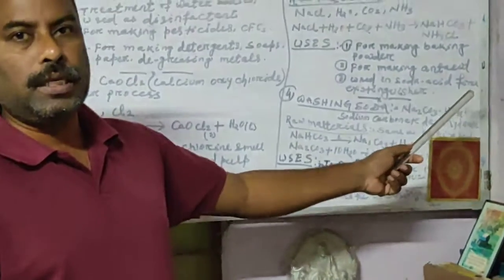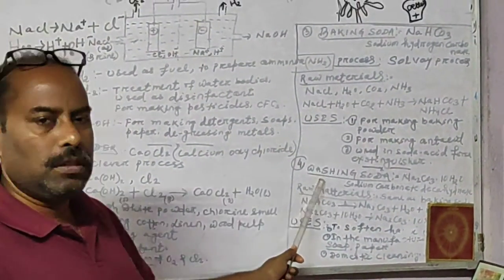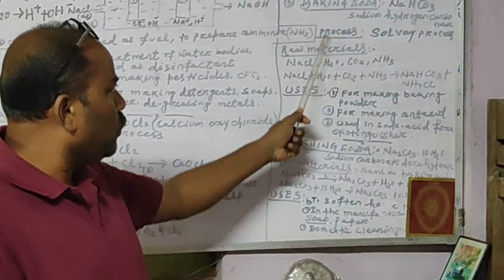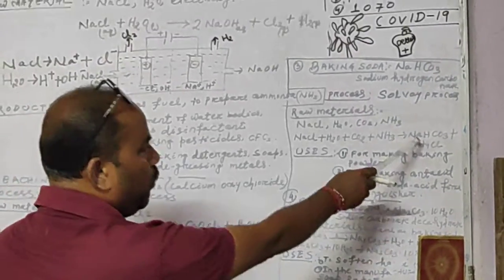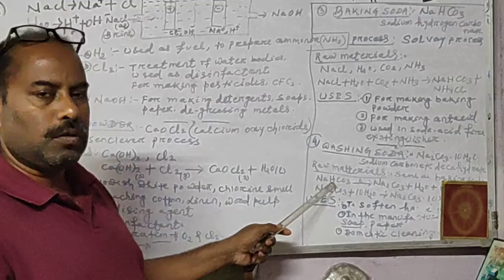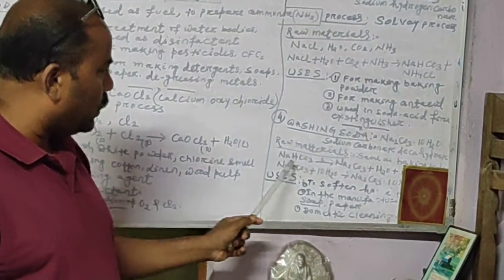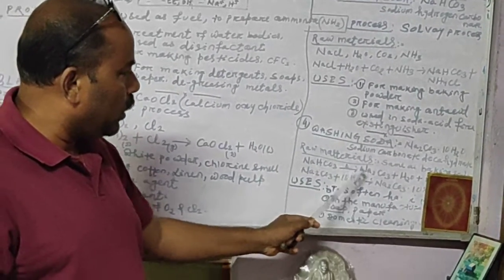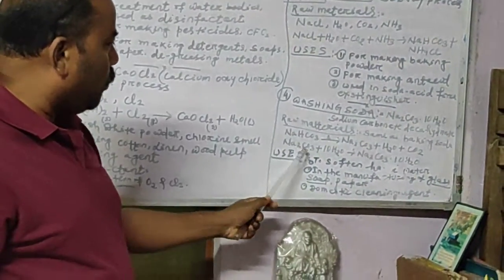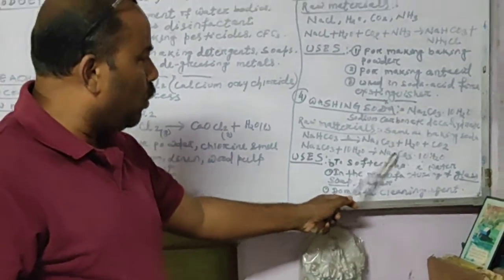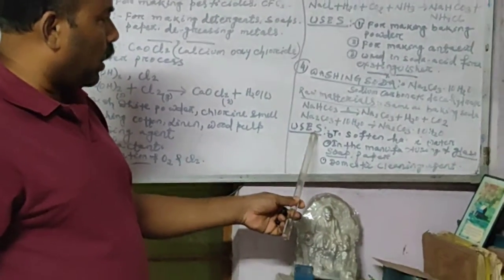Washing soda is also prepared by the Solvay process using the same raw materials as baking soda. After obtaining baking soda in this process, the baking soda is heated, which splits it into sodium carbonate, water, and carbon dioxide. The sodium carbonate is then treated with 10 molecules of water to get sodium carbonate decahydrate — washing soda.